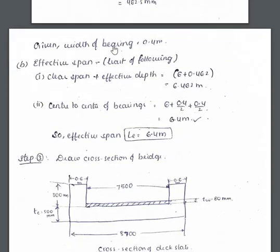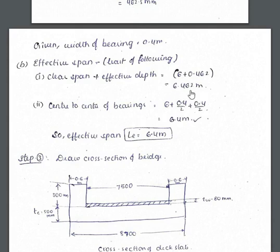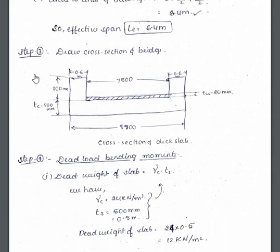Now we calculate the effective span, taking the least of: (1) clear span + effective depth = 6 + 0.4625 = 6.462 m, and (2) centre-to-centre of bearings = 6 + 0.5×0.4 + 0.5×0.4 = 6.4 m. The least value is 6.4 m, so effective span = 6.4 m.